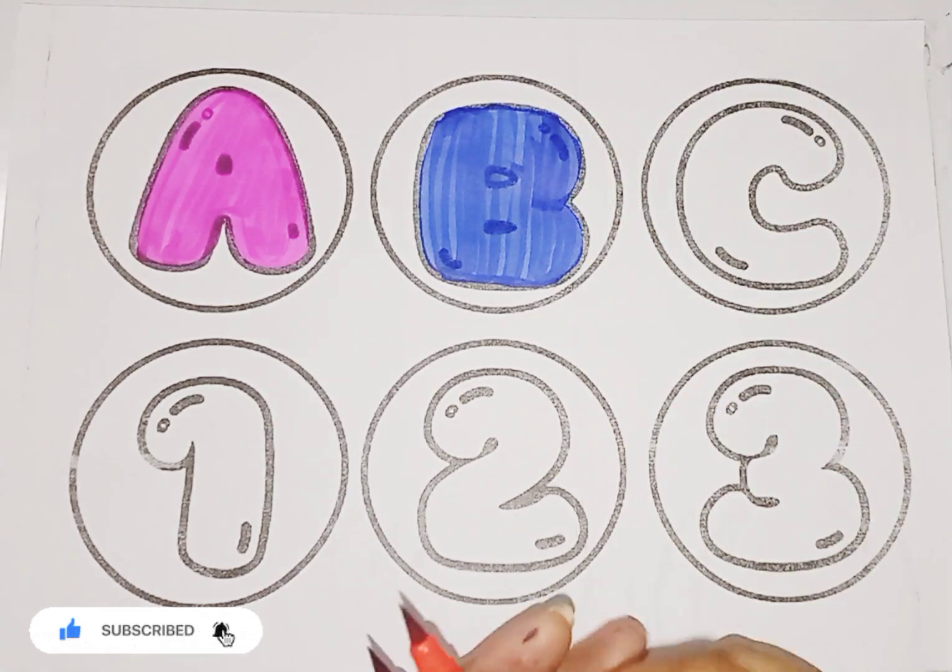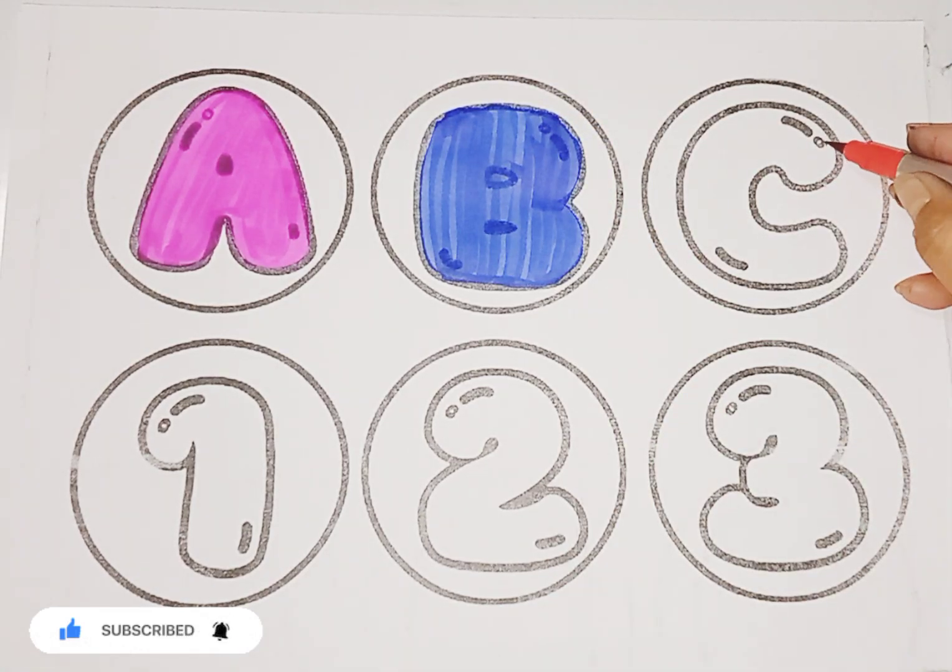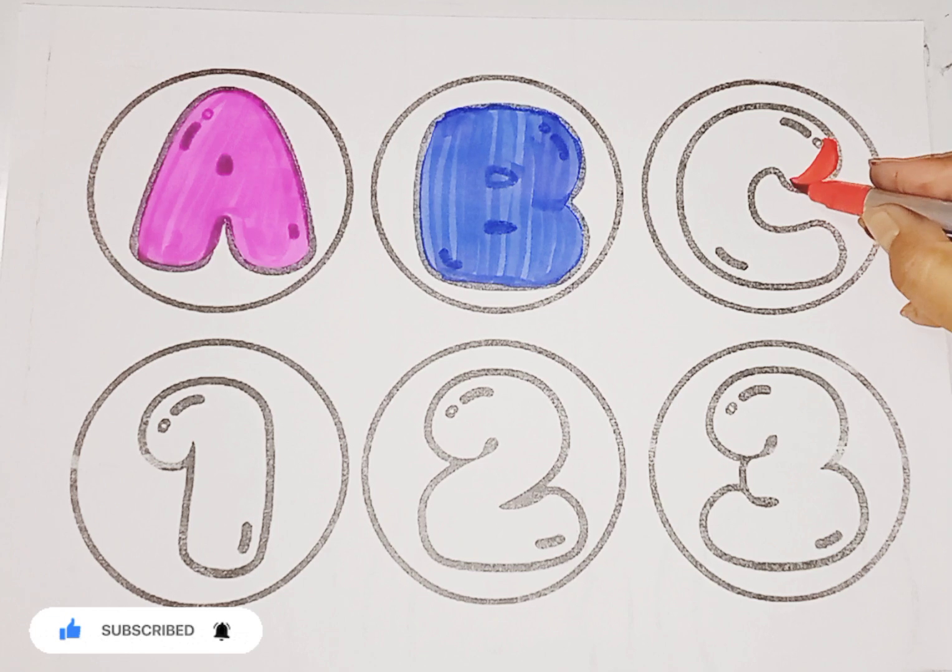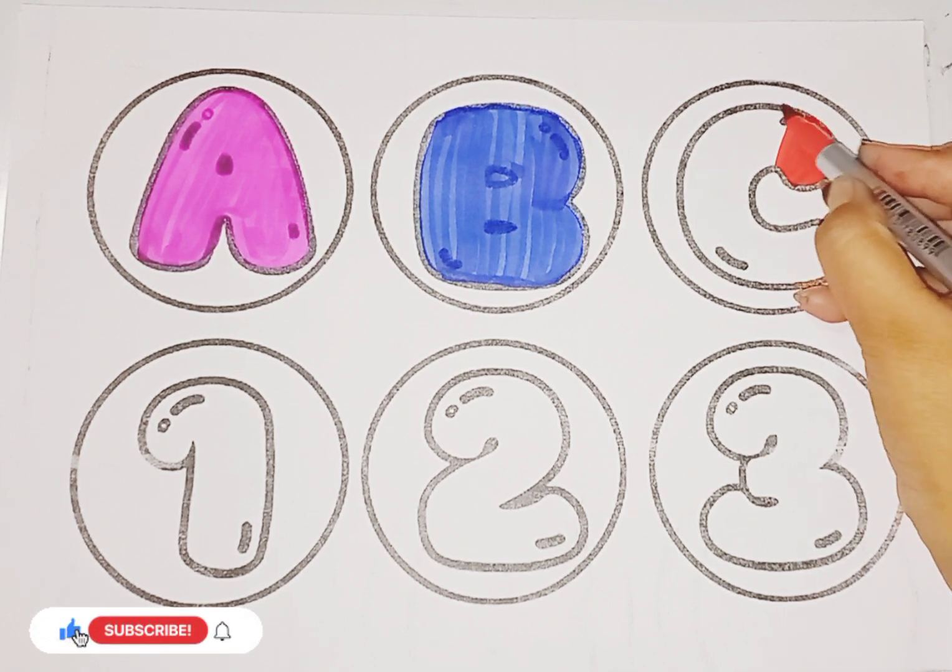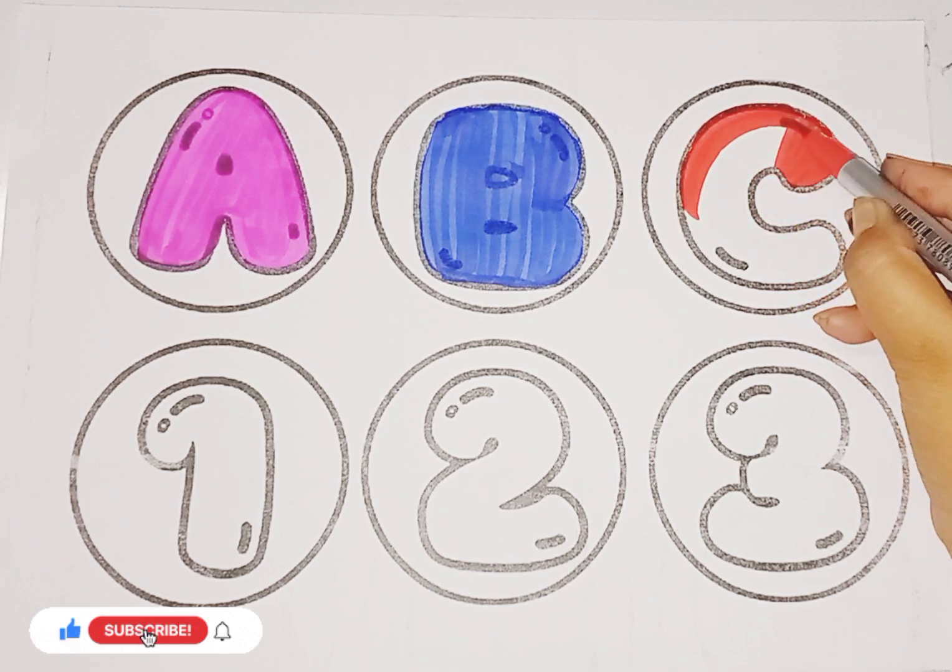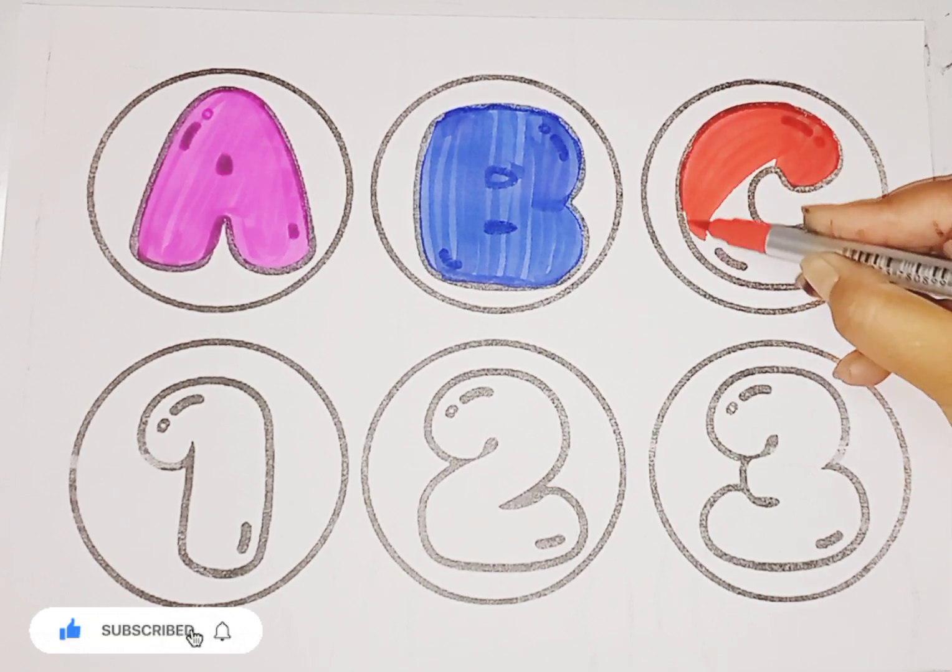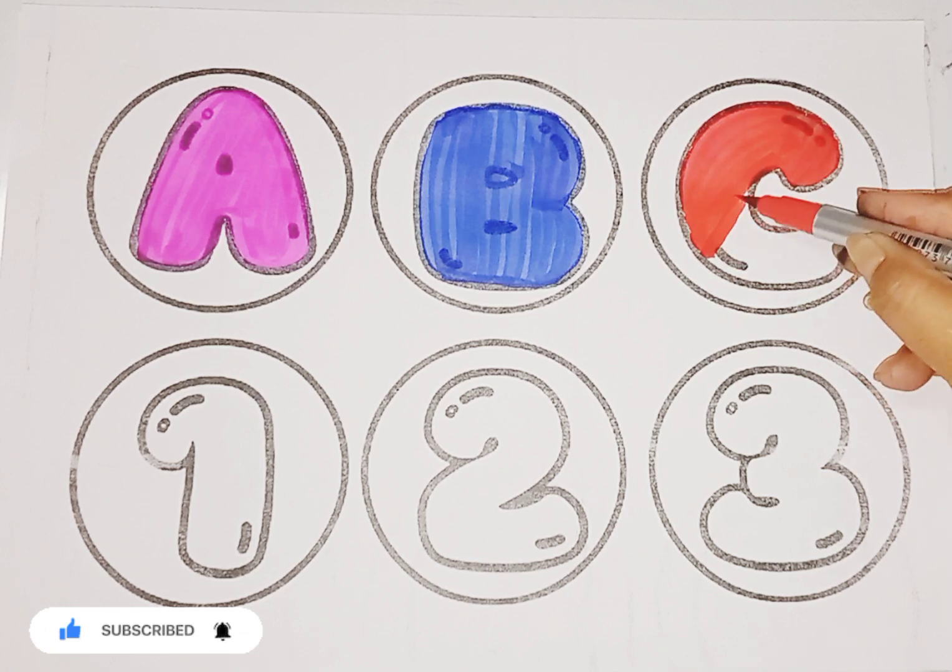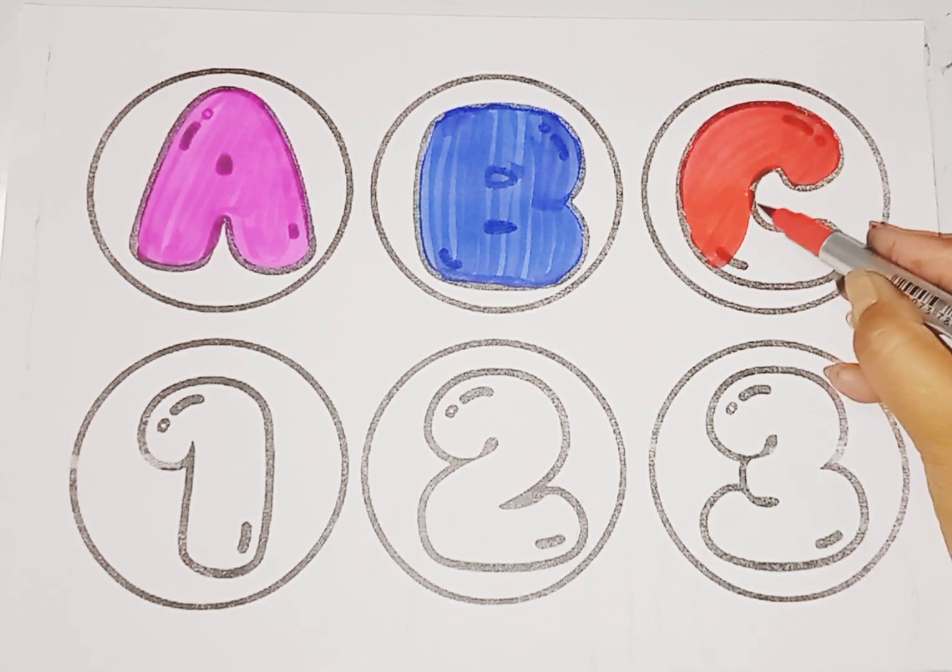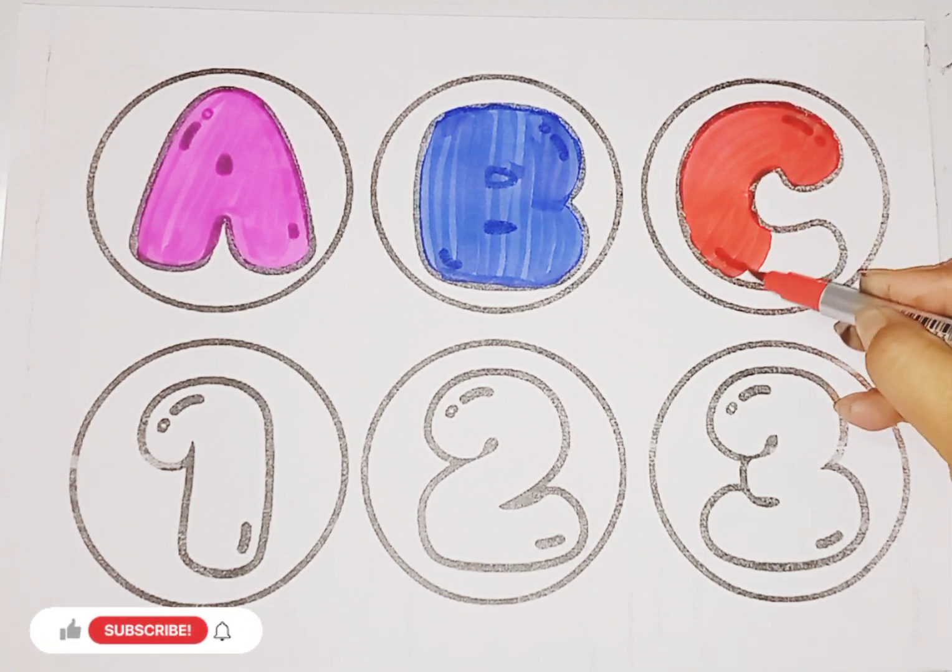Next, letter C. C for cat, C for candy, C for camera, C for crocodile. Letter C.